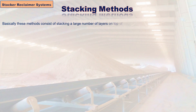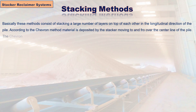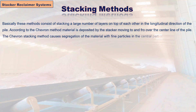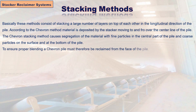These stacking methods consist of stacking a large number of layers on top of each other in the longitudinal direction of the pile. According to the chevron method, material is deposited by the stacker moving to and fro over the center line of the pile. The chevron method causes segregation, with fine particles in the central part and coarse particles on the surface and at the bottom. To ensure proper blending, a chevron pile must be reclaimed from the face, working across the entire cross section.